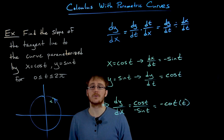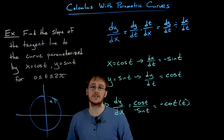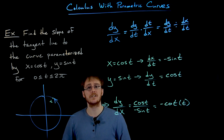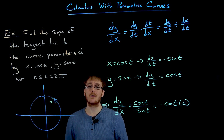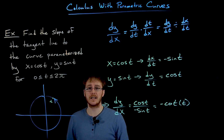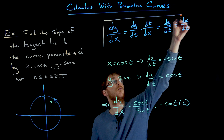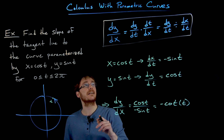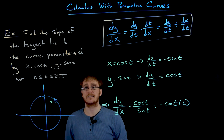We plug that t value into our slope formula to get the slope, then plug it into our x and y equations to find the point the line passes through — and once we have that information, we can construct the equation of our tangent line just like always. The big takeaway from this example is the process: if we want dy/dx for a parametric curve, we use the chain rule — take dy/dt and divide it by dx/dt.